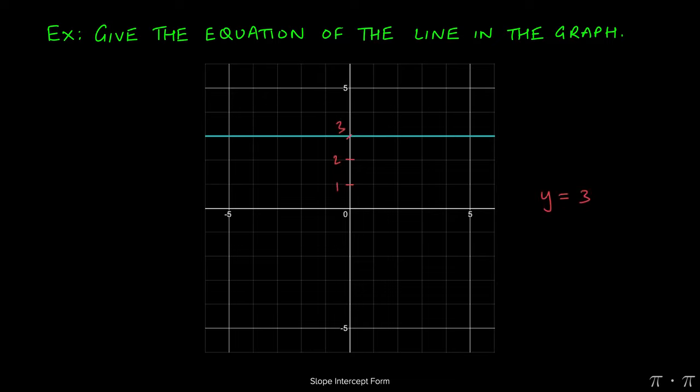This is also a very simple question, similar to the previous one. The equation of all horizontal lines is always given by the y-coordinate through which they pass. So in this particular case, since the blue line passes through y equals three, that's the equation of the line. And that's it.